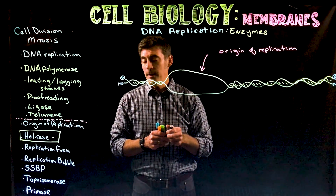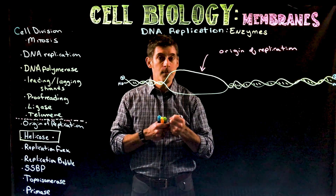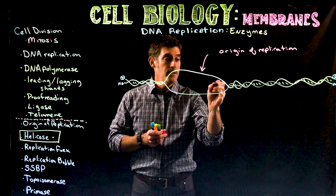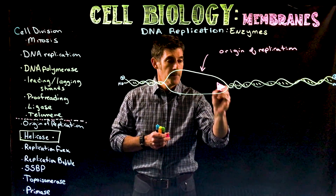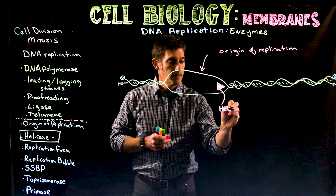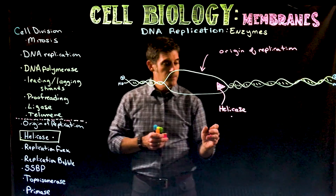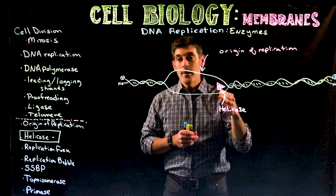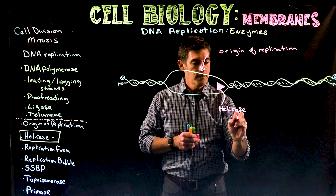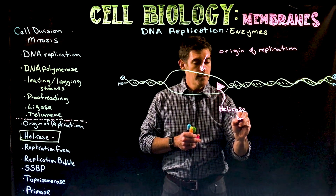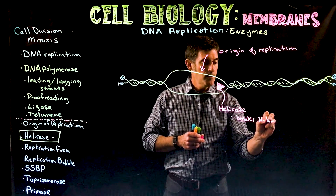At this one origin of replication, we have the binding of the enzyme called helicase. Helicase, as mentioned in a previous lecture, is going to break the hydrogen bonds between the nucleotides.